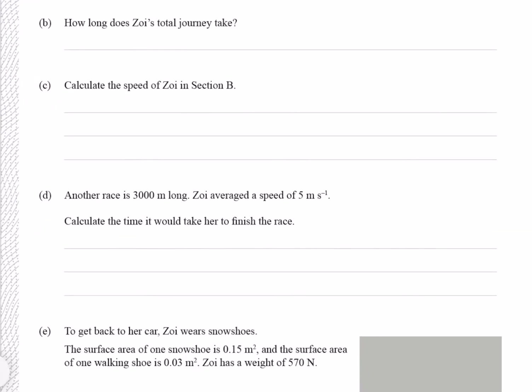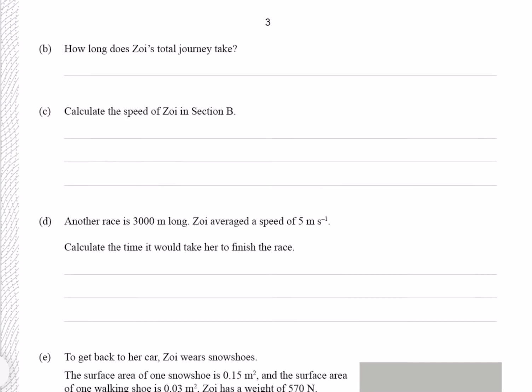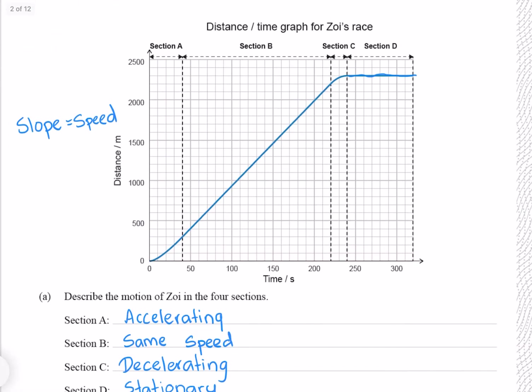Question B: How long does Zoe's total journey take? Zoe's journey starts at zero seconds, and the time at which Zoe finally comes to a stop is right here, and that time is 240 seconds.